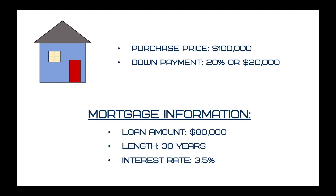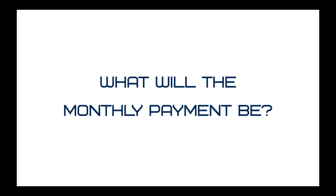Let's say you found a home and want to purchase it. The purchase price is $100,000 and you're going to put down 20% for your down payment, which is equal to $20,000. The loan amount is $80,000, which is simply the purchase price of $100,000 minus the down payment of $20,000. You've chosen a loan length of 30 years and the interest rate given to you by the bank is 3.5%. So what will the monthly payment be?